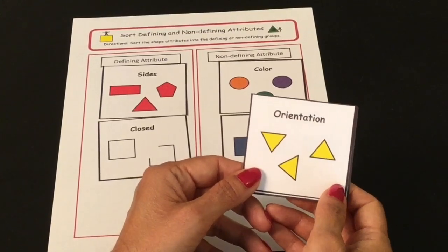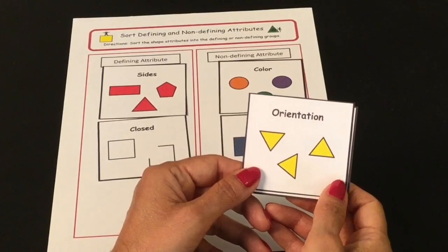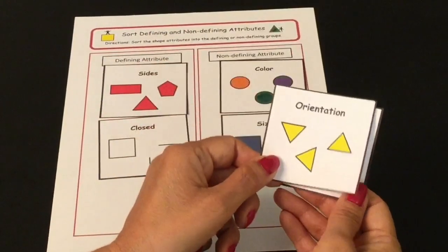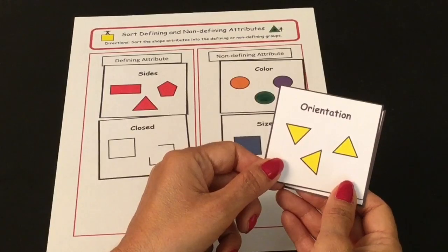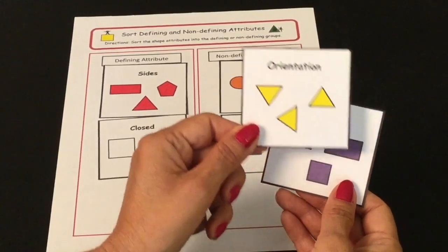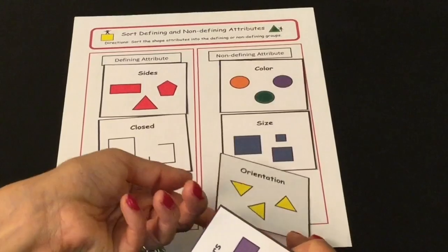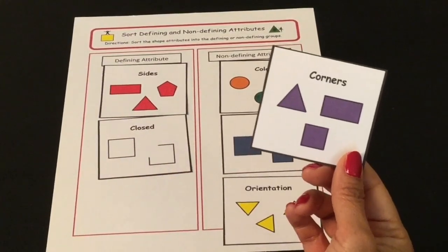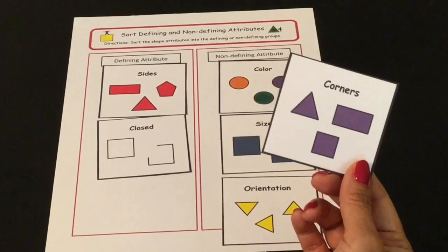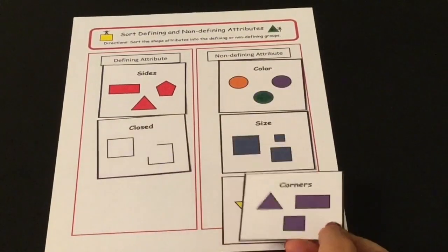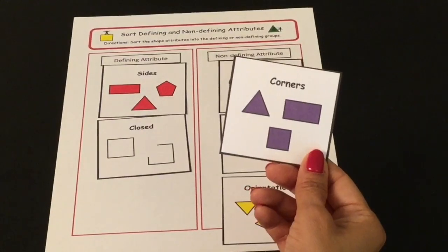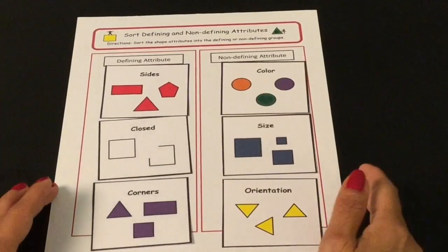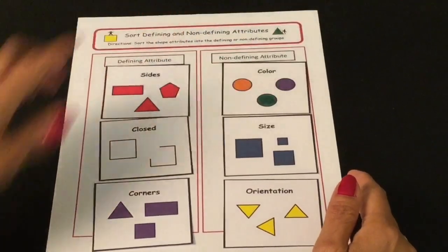Here's the next one: orientation. Does the orientation or the direction of a shape matter? Is that a defining or a non-defining attribute? The orientation of a shape does not matter, so it is a non-defining attribute. And the last one — corners. Does the number of corners matter? Is it a defining or a non-defining attribute? It is a defining attribute — it does matter. So this is our chart on defining and non-defining attributes.